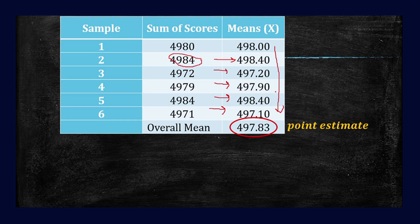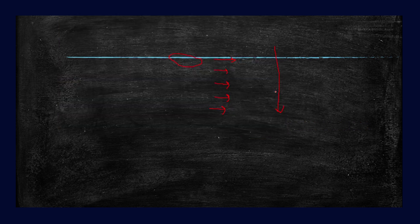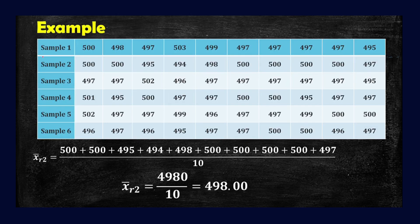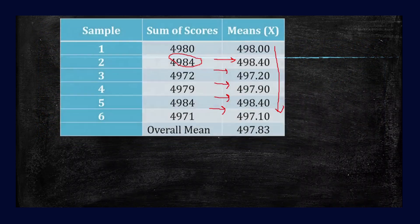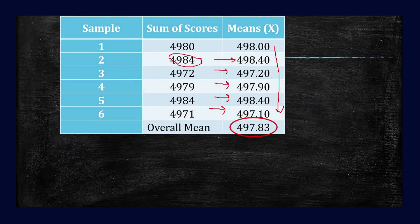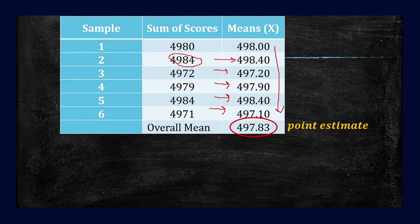So actually, there's another process. Other than getting the mean for each sample or for each row, you can also get the mean first for each column. The result will be the same point estimate. Or get all the data, add them all together, then divide it by 60. So the result will be the same point estimate. We just did it by row so that our addition isn't too long. We don't have to add too many numbers. Okay?